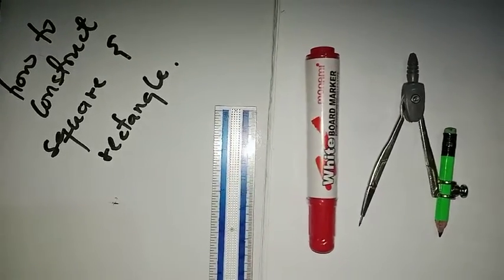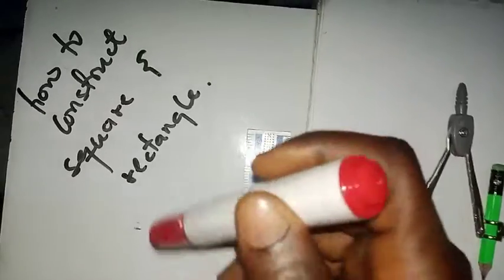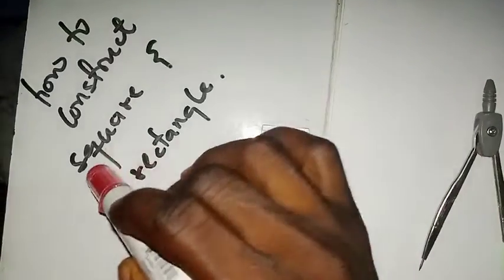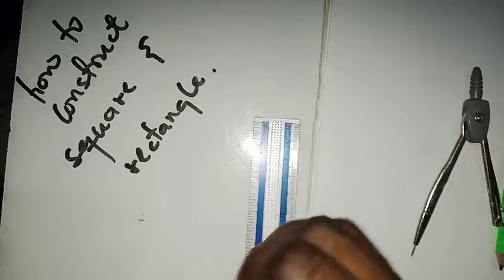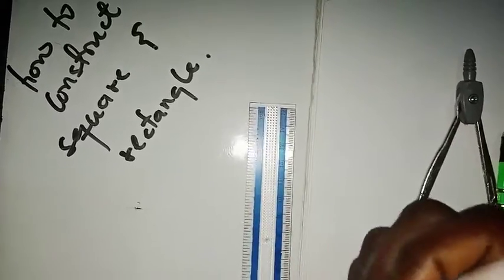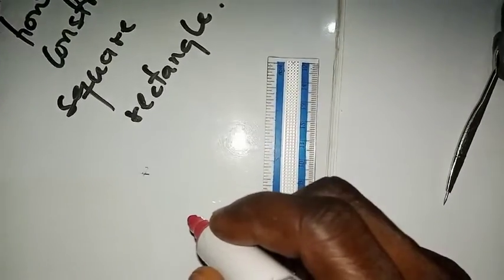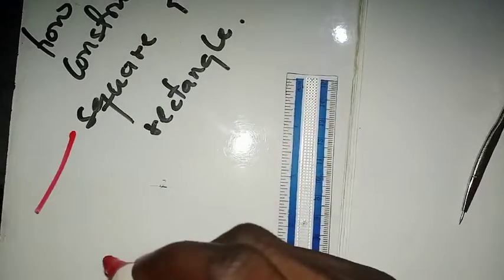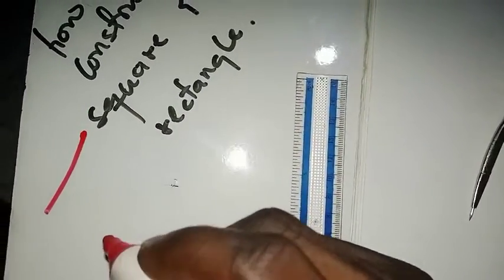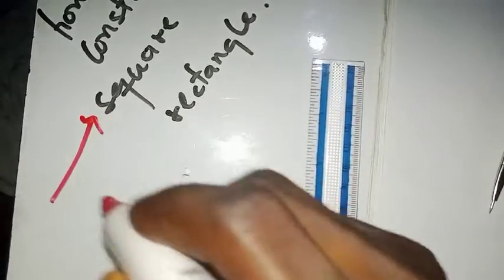In this video we are going to learn how to construct a square and a rectangle. These are two quadrilateral shapes that we are going to construct. Before we start, there is one important thing you must understand about the properties of a square as well as a rectangle.